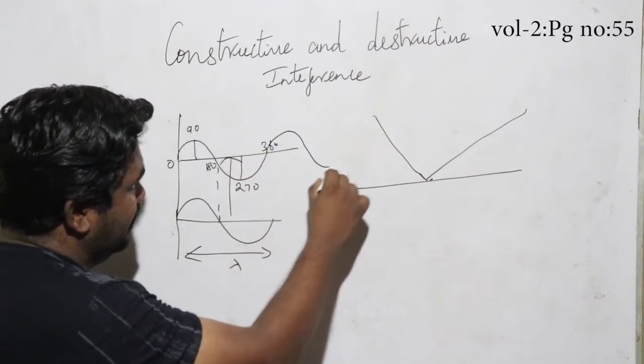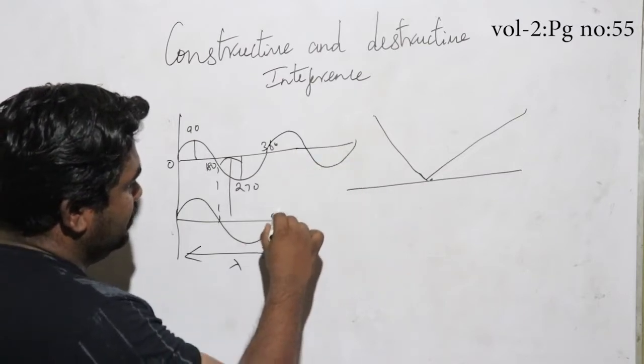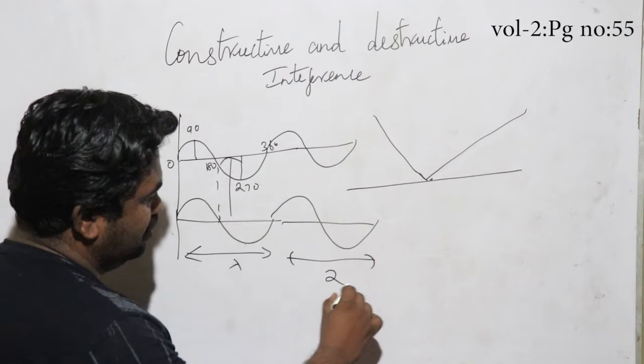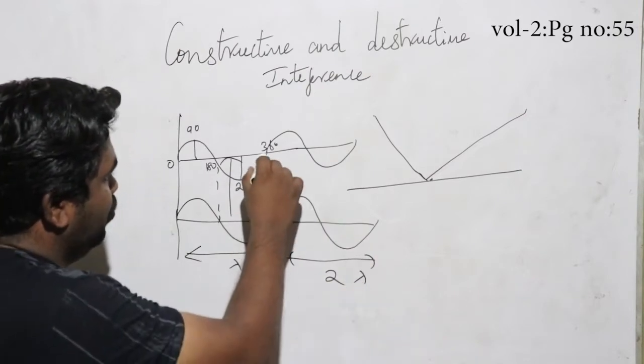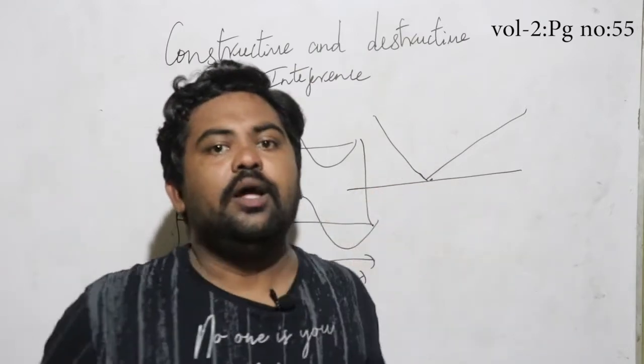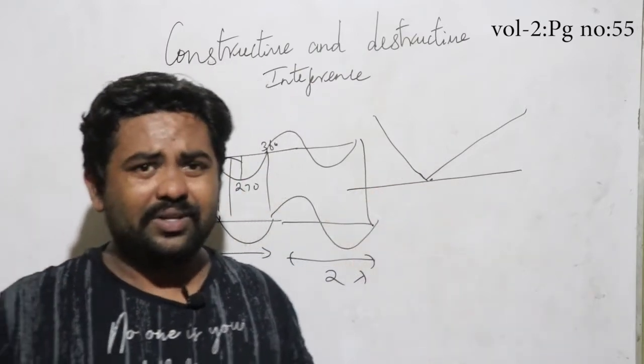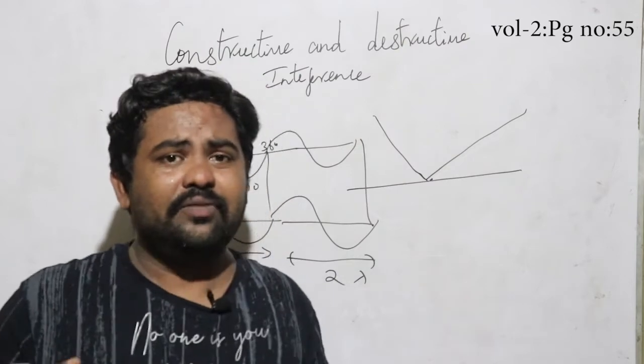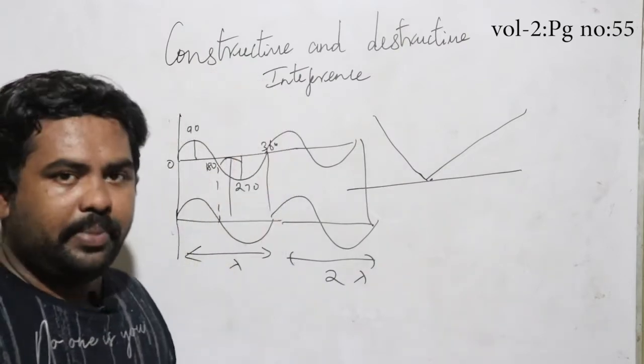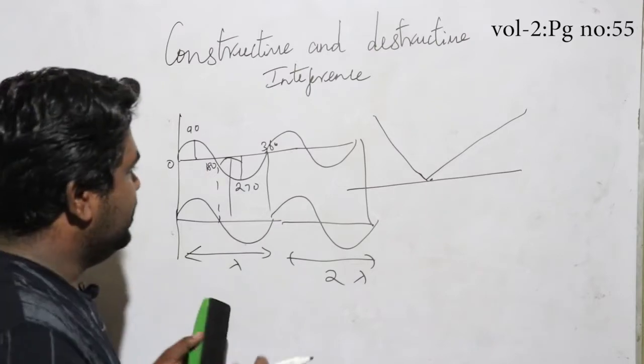Again, this wave will be the same. If I am superimposed, it becomes two lambda. This is 2π. What do we do? 2π, 4π, 6π. This wave will be constructive. If we do the same angle, same phase, same path, that will be constructive.